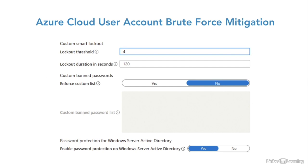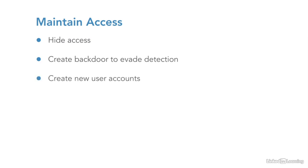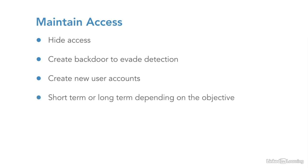After compromising a system, attackers often create a backdoor to evade detection. This might be done by creating a user account that looks like it should be there — such as a service account — often with raised privileges. Conducting periodic user permission auditing can uncover these instances. Depending on the attacker's objective, maintaining access could be short-term or long-term. There have been publicized events where perpetrators had access to company networks for months or even years before being discovered.